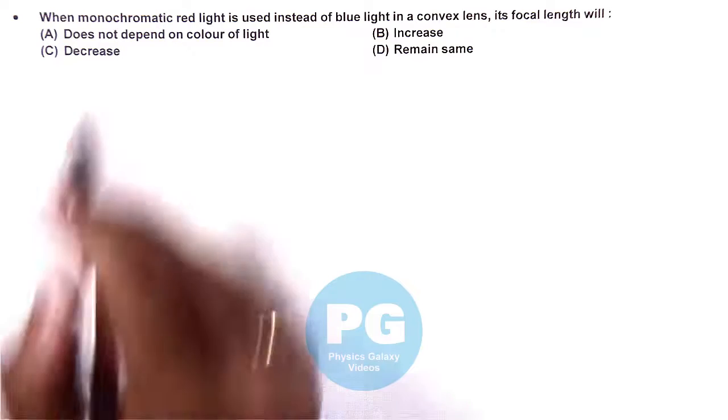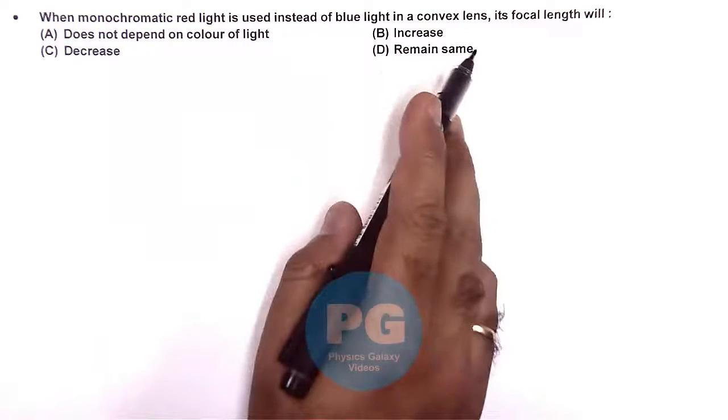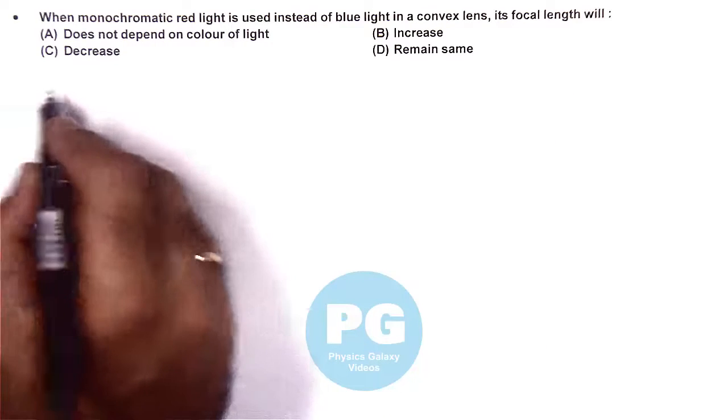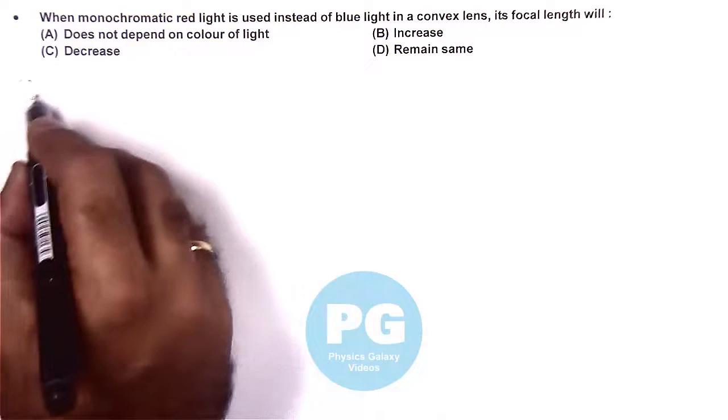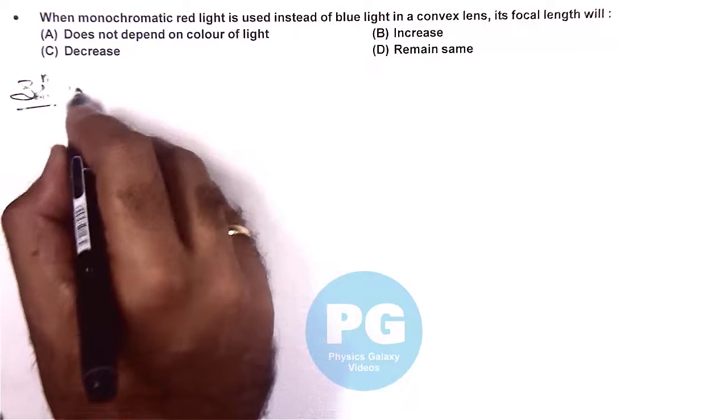In this question, we are given: when monochromatic red light is used instead of blue light in a convex lens, its focal length will... Here, from lens makers formula and dispersion we have studied, we can see...